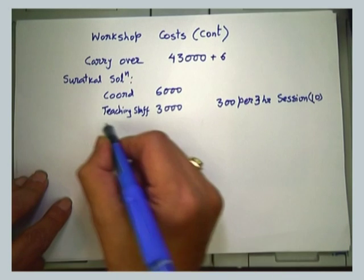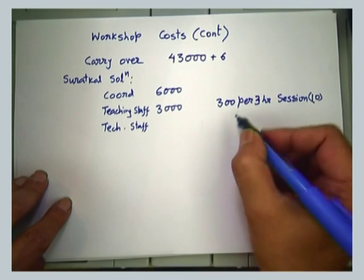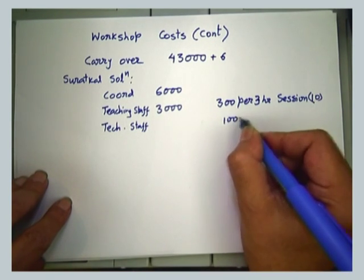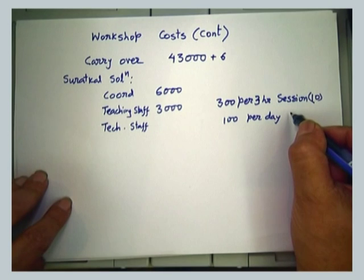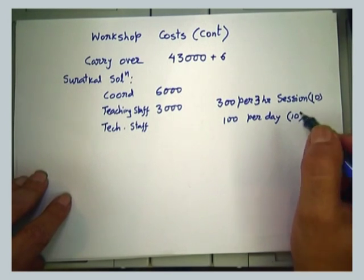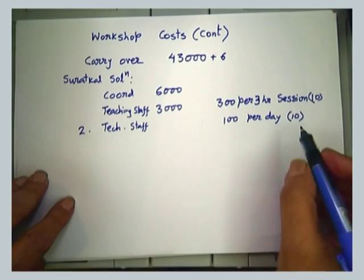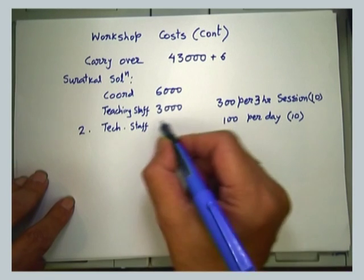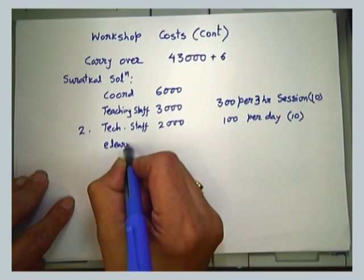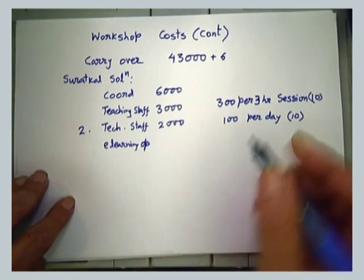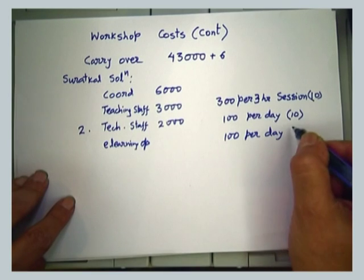And what about technical staff? 100 rupees per day — they will help with lab and technical support. This is for 10 days. How many technical staff? I am taking two. And for the e-learning operator, they need one person to operate everything, so for that I decided 100 rupees per day for one person only.